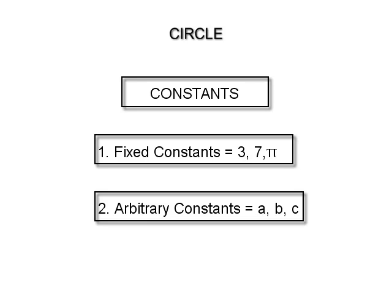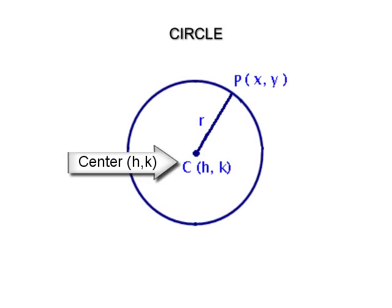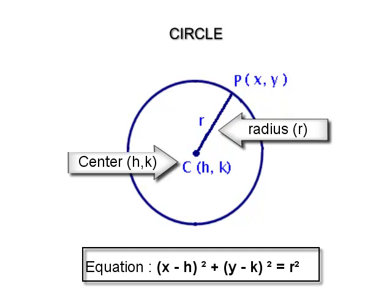The center of the circle need not be at the origin. If the center of the circle is (h, k) and the radius is r, then its equation is (x − h)² + (y − k)² = r².